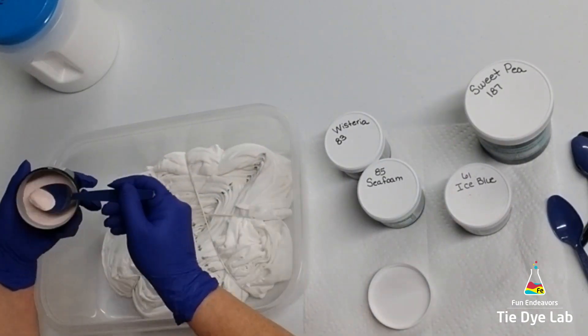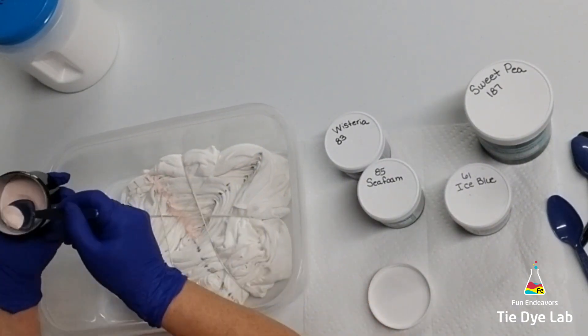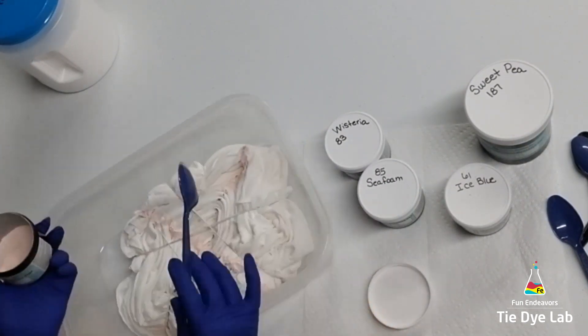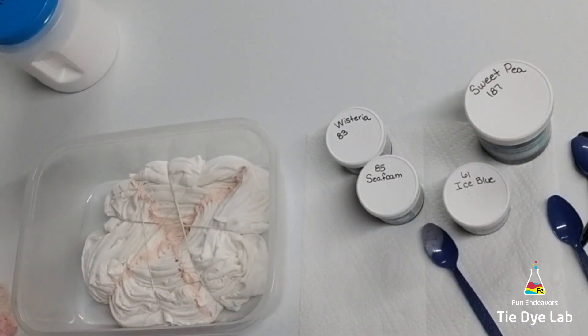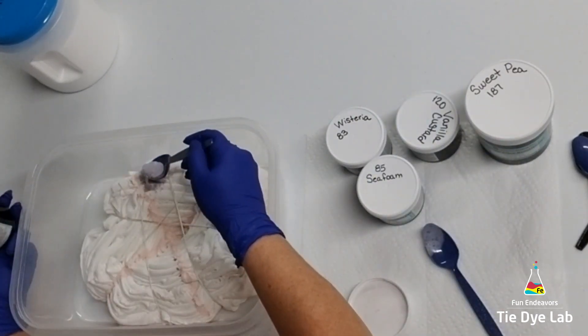Then I'm going to use some lighter Dharma colors on it. I'm using vanilla custard on the line, followed by ice blue, seafoam green, wisteria, and sweet pea.